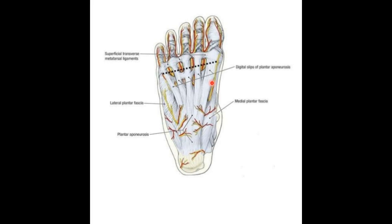The plantar aponeurosis arises posteriorly from the calcaneus, specifically at the medial calcaneal tubercle. It then travels to the toe region — the metatarsophalangeal joint region — where it is held together by transverse metatarsal ligaments. It sends tendinous slips into each of the phalanges, and those five plantar fascia strips are held in place by the transverse metatarsal ligament.